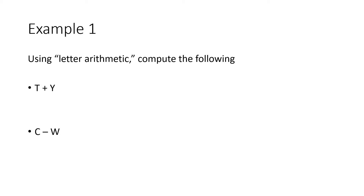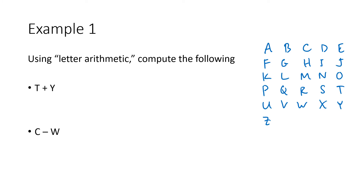So T plus Y and C minus W. My first step is going to be to write out the alphabet and number the letters. Notice that I've written the letters in rows of 5, and the reason I'm doing that is so that it's easier to number them. I don't really need to number all of the letters, I just need to number the ones that are involved in these problems.